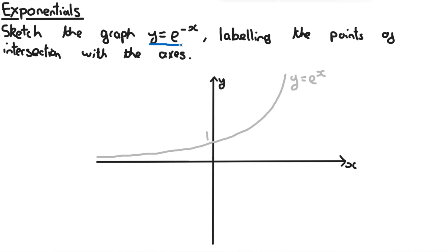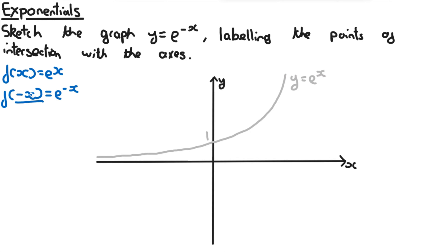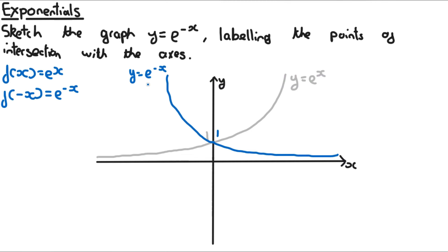Here's another example: sketch y equals e to the power of minus x. If f(x) equals e to the power of x, then e to the power of minus x is f(−x), which is a reflection in the y-axis. It will intercept the y-axis at 1 since it's the same intercept. Because e to the power of minus x comes up quite a bit, it's worth memorising what it looks like — just a reflection in the y-axis.